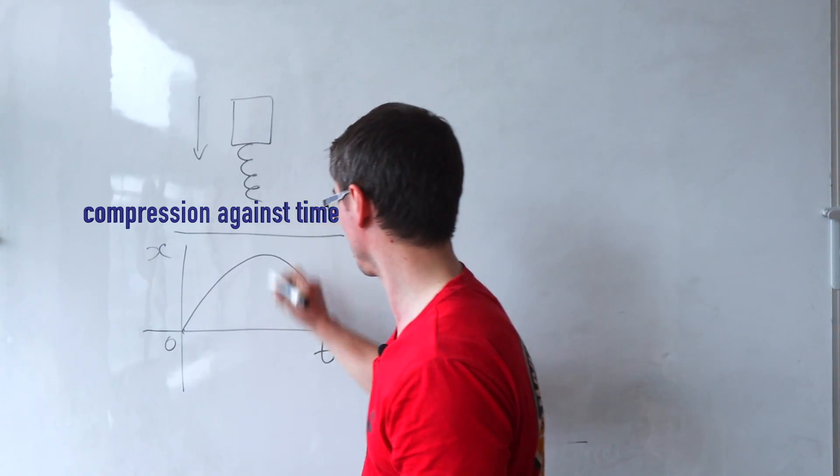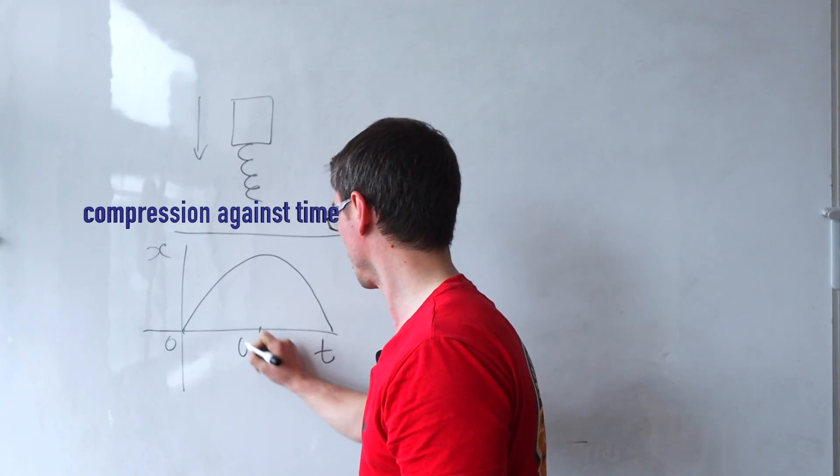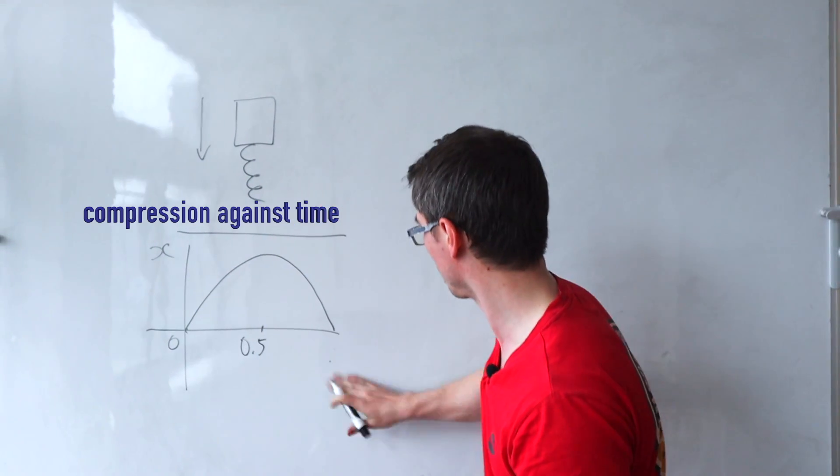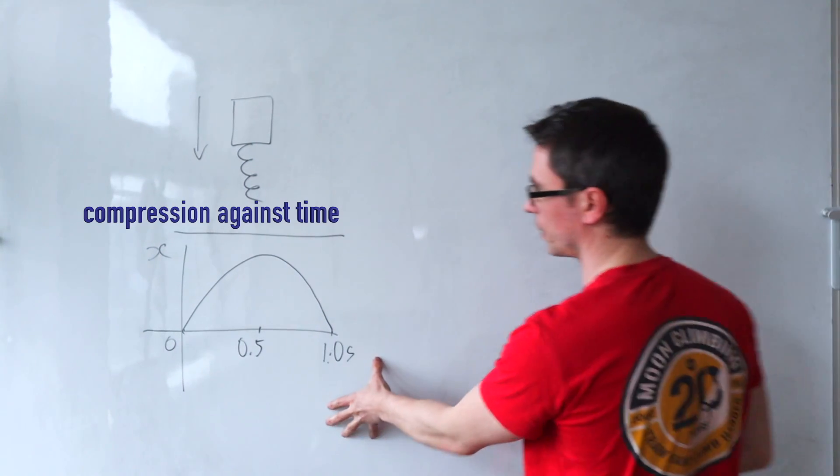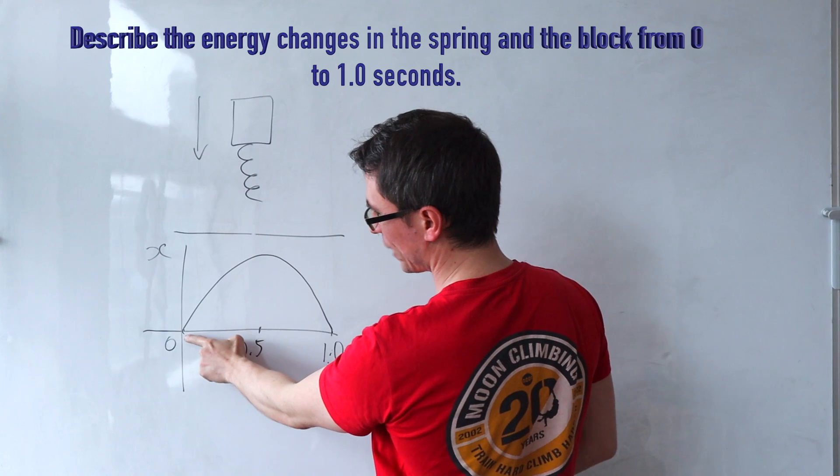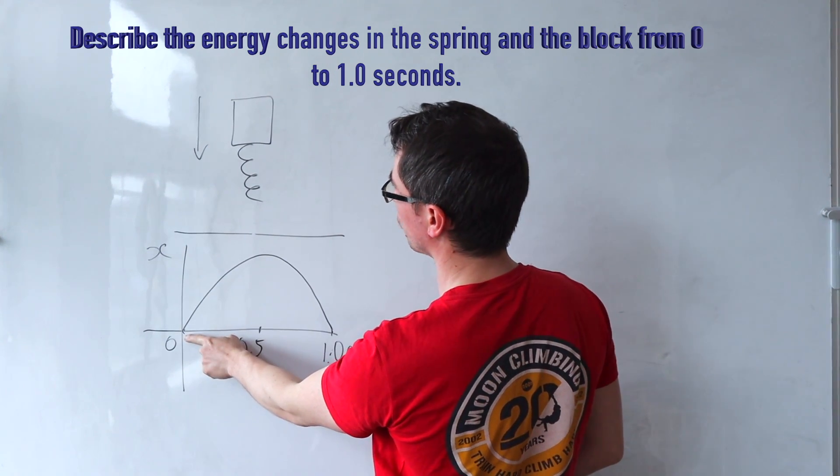Let's say that this is t equals zero. Maximum compression at half a second. Just to keep things simple, let's say that this here is 1.0 seconds.